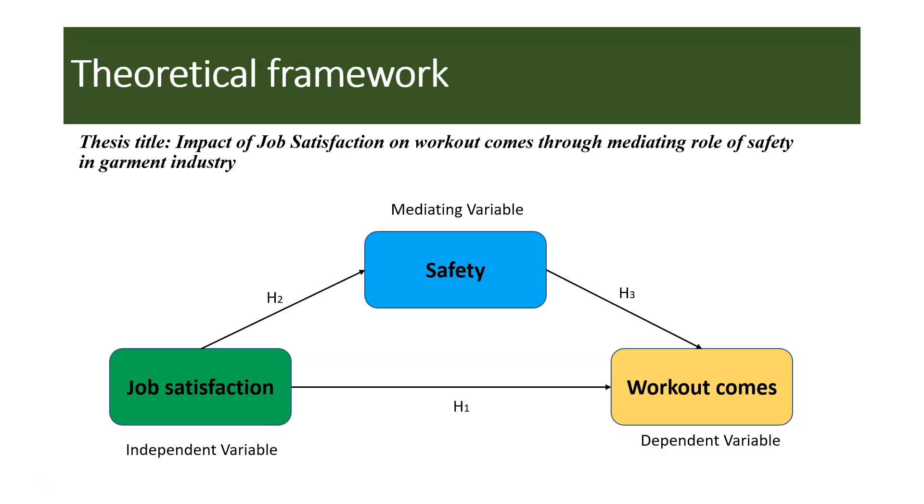Here comes the theoretical framework. Impact of job satisfaction on work outcomes through mediating role of safety in government sector. This model has been rooted from the three job satisfaction theories which we have seen in our earlier slides. It is starting from job satisfaction, this is independent variable, leading towards safety which is a mediating variable, and work outcomes, it is dependent variable. The model is showing three different hypotheses. There are actually four hypotheses. We can add H4 for mediating role.